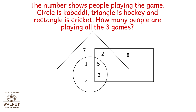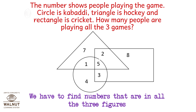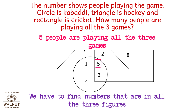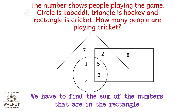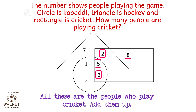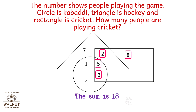The numbers show people playing games. Circle is Kabaddi, triangle is hockey, and rectangle is cricket. How many people are playing all three games? We find numbers present in all three figures — that is 5, because it is in the circle, the triangle, and the rectangle. So 5 people are playing all three games. The sum of numbers in the rectangle is 5 plus 2 plus 8 plus 3, which equals 18 — so 18 people play cricket.